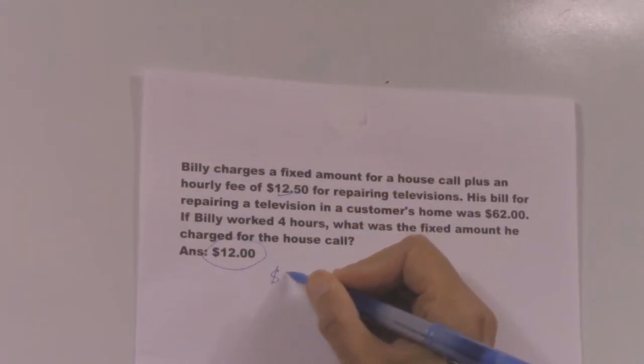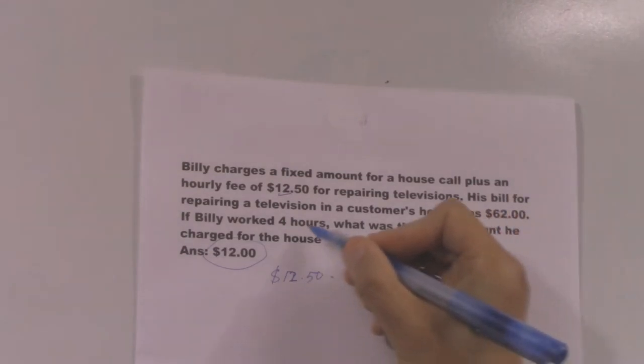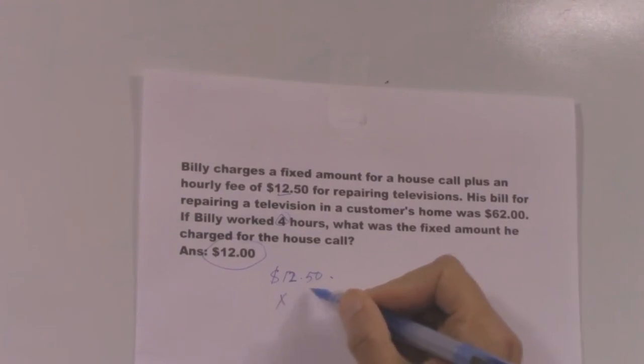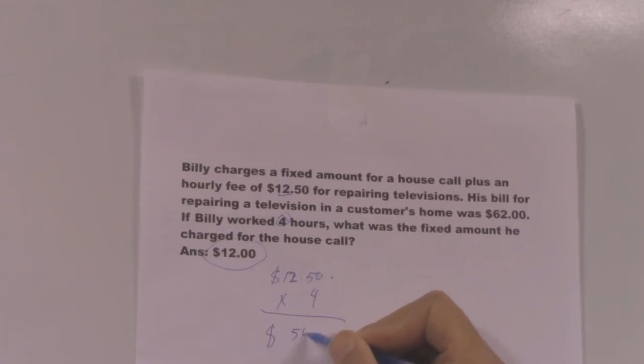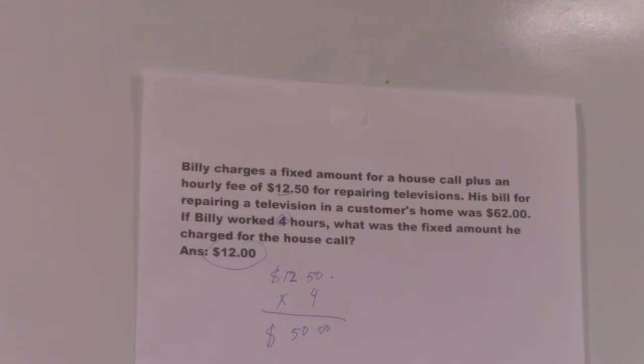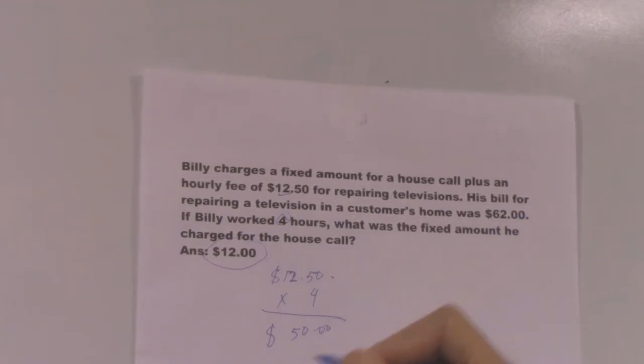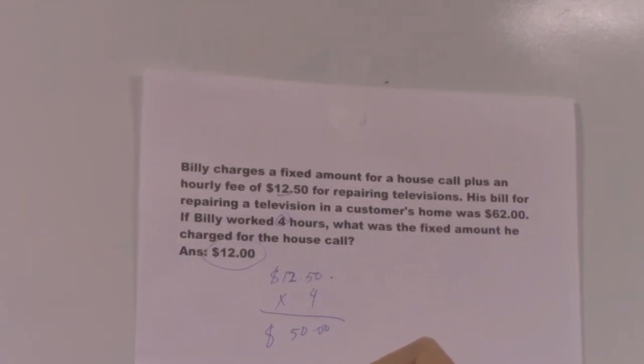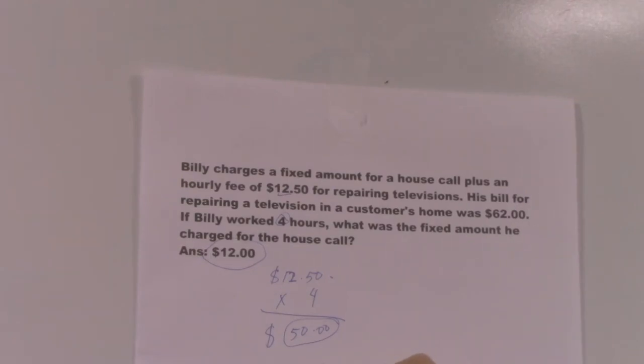Here is the answer: $12. The hourly fee is $12.50, and there are 4 hours, so you times 4 hours. The answer here is $50. And the bill is $62, so $62 minus $50 equals $12.